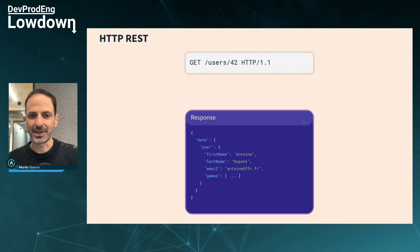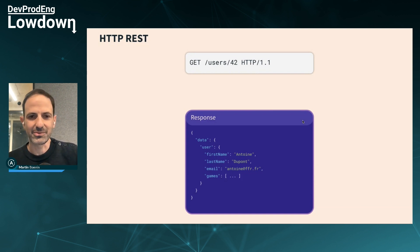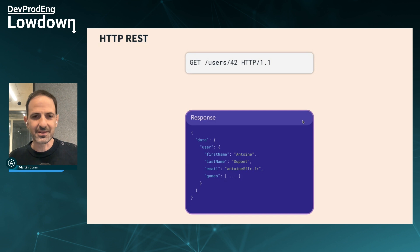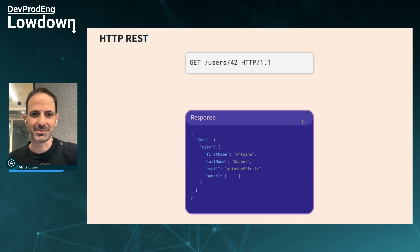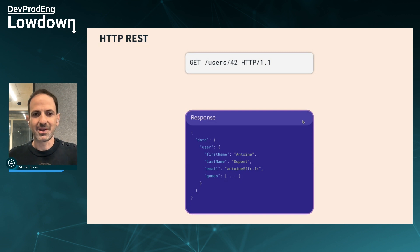With REST, you have an endpoint URL — say, to get user 42 — you do a GET on that URL and get back a JSON response with a lot of fields, maybe too much, maybe too little. The thing is, maybe you're not interested in everything. Maybe you love Antoine Dupont but don't want his email, or you're not interested in all the games he played. This is where GraphQL comes in: instead of having different URLs returning different sets of data that you don't really know what's inside, GraphQL works the other way around.